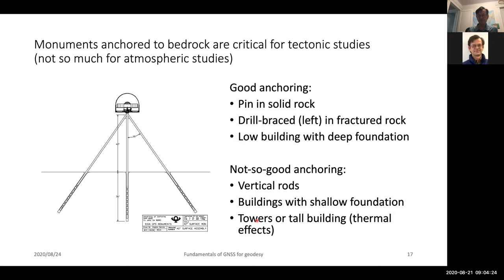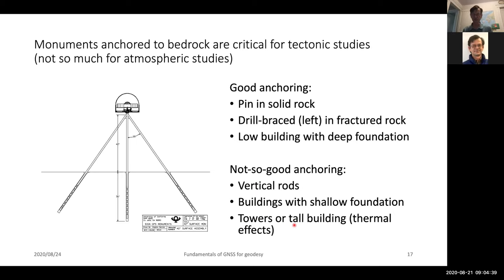The thermal effect on towers and tall buildings is typically a bending because of the asymmetric heating of the body during the day from the sun. We have some interesting results from a very tall building where there is actually 20 centimeters of motion throughout the year just due to thermal warming of one side.